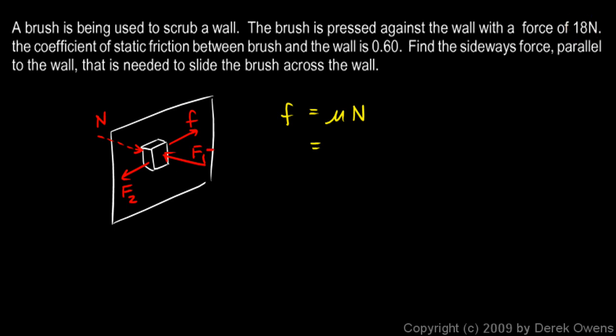So this force F1 here, 18, that's what I'll use for the normal force because the normal force has to be the same as that. If you can see in the diagram if this force were bigger than the normal force the brush would be smashing through the wall. If the normal force were bigger than F1 then the brush would be accelerating away from the wall. And neither of those is the case. If you're scrubbing the wall the brush is right against the wall. So this force here has to equal N.